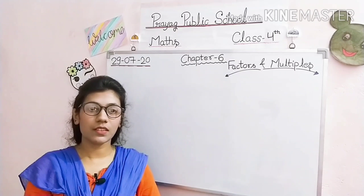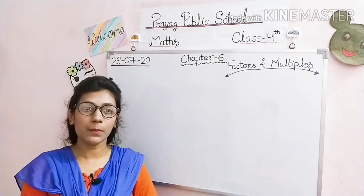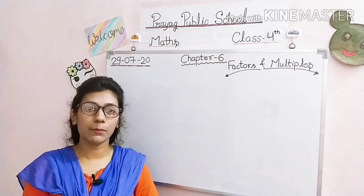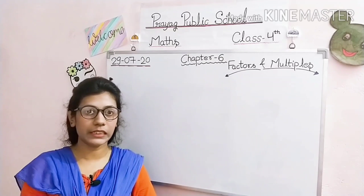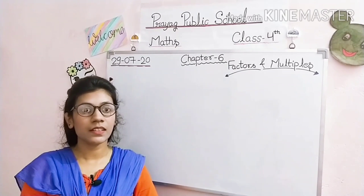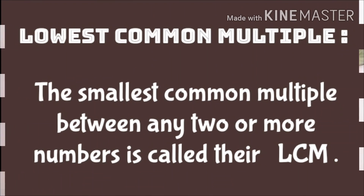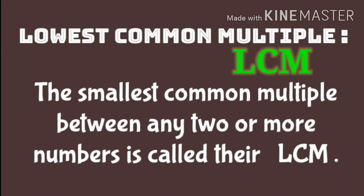Good morning students. We are on chapter number 6 and the name of the chapter is Factors and Multiples. Before starting today's class, let's do a small recap of what we learned in our previous class. In the previous class, we learned about LCM — lowest common multiple — the smallest common multiple between any two or more numbers is called their LCM.